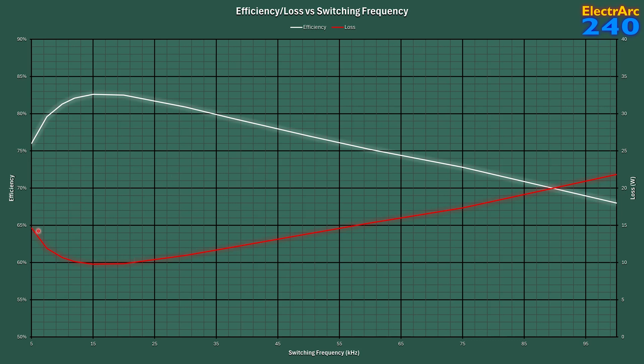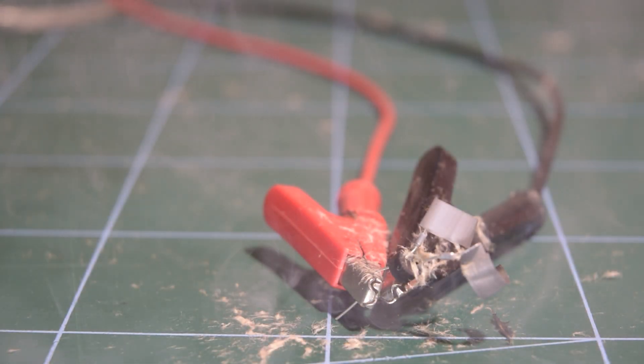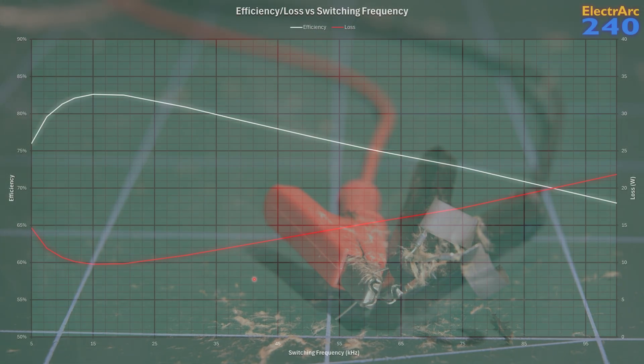So you might be thinking, oh, this is great. Reducing the switching frequency gives us really big losses. But the problem is the losses aren't just in the MOSFETs, which is where we want it. The losses in the capacitors are particularly critical because they'll get really hot. They might even overheat and explode. So of the two directions that we can change the switching frequency, increasing is definitely the preferred option.